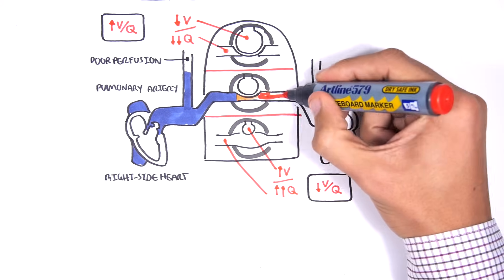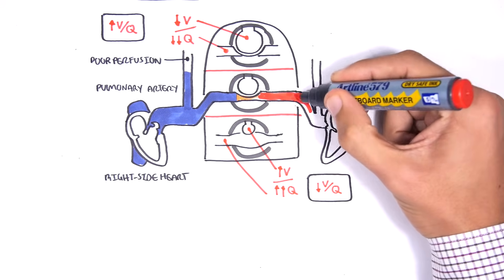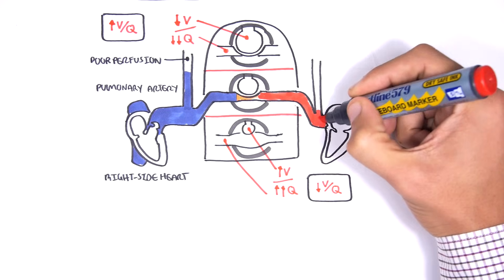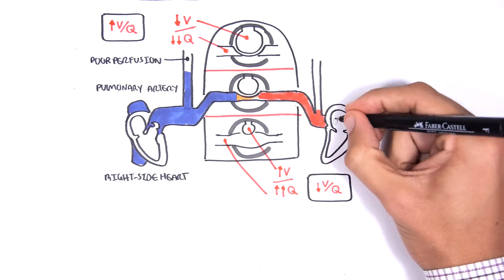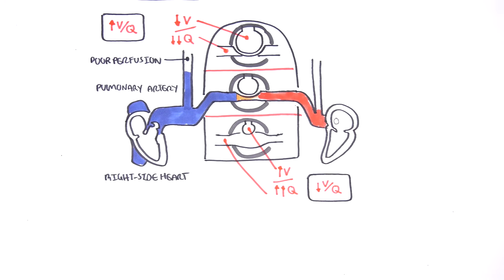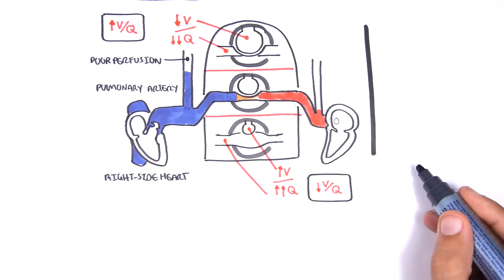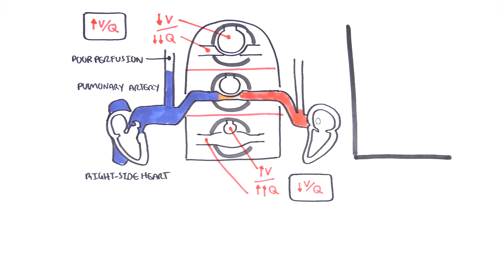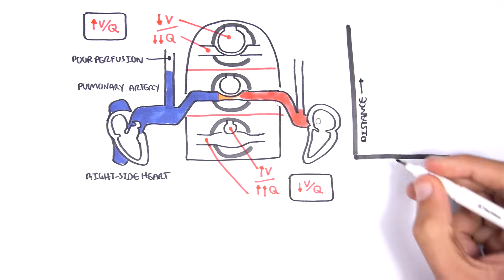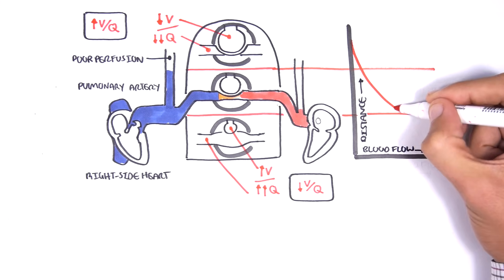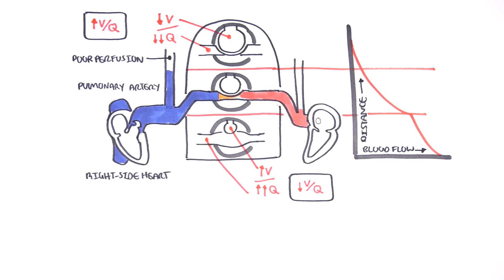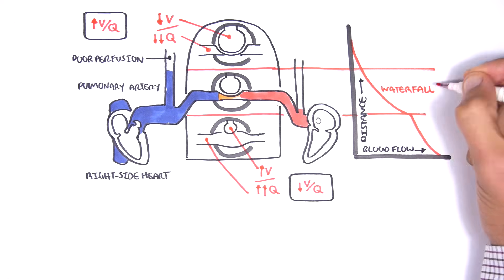One more thing about venous return to the left side of the heart: the waterfall effect, whereby the height does not actually influence blood flow. Looking at an example with distance as height — towards the apex and blood flow — we would assume that blood flow coming from the apex would be highest. But just like a waterfall, the height of the waterfall has no influence on flow.